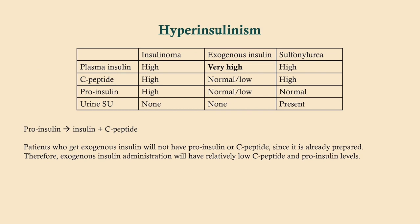This is often how it's shown to you on the exam: a patient with hypoglycemia and three main choices. The big three are insulinoma — a tumor in the pancreas that secretes insulin — exogenous insulin, meaning the patient is either taking insulin that doesn't belong to them or took too much of their own, and sulfonylureas.